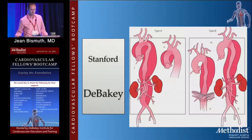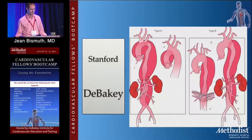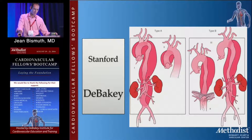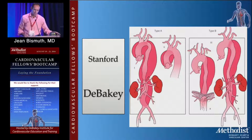There are really only two classifications you need to know: the Stanford and the DeBakey classification. Stanford makes it easy — Type A is everything that involves the ascending, and Type B is from the left subclavian down. DeBakey Type 1 involves everything, Type 2 just the ascending — you see very few of those, probably an imaging misnomer. They're treated the same way; the ascending is repaired. Type 3s are essentially the equivalent to DeBakey Type Bs.